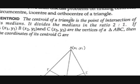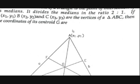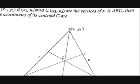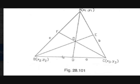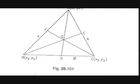Next, orthocenter of a triangle. Orthocenter is nothing but the meeting point of altitudes. The altitude through vertex A passes through A and is perpendicular to the opposite side BC.